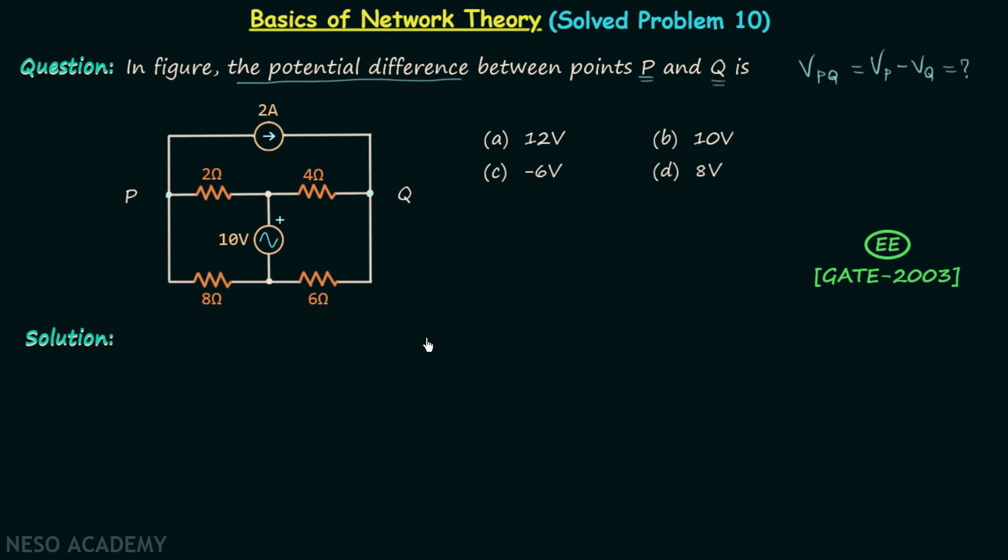I hope you tried solving this question and now it's my turn to solve this question. You can see that in order to find out VPQ it is important to find VP and VQ. So we will focus on the calculation of potential at this point VP and potential at this point VQ, and I will use nodal analysis to find VP and VQ.